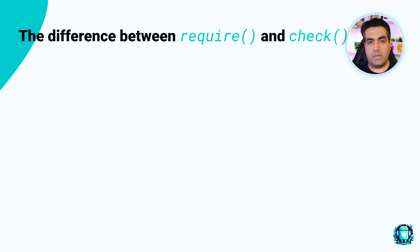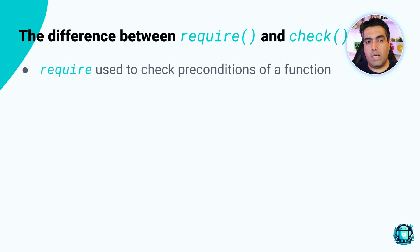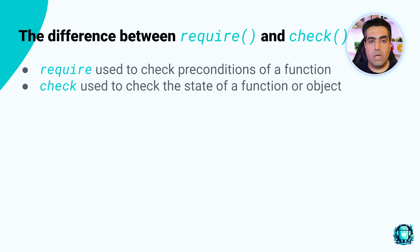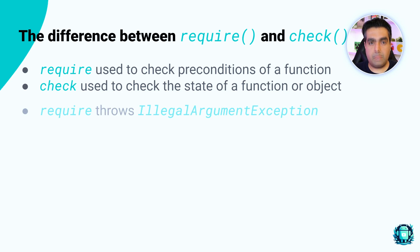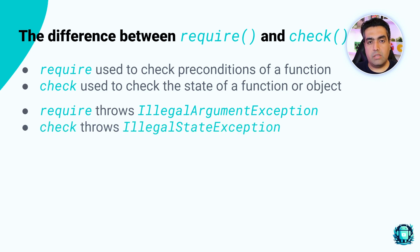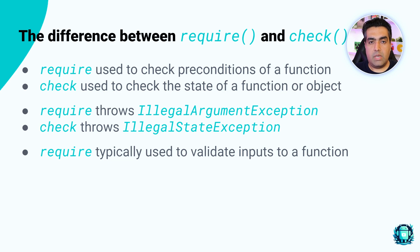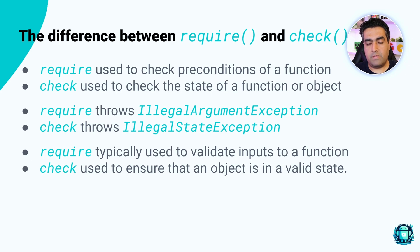You may ask yourself: what's the difference between require and check? As it sounds in English, require is used to check preconditions of a function — conditions that must be true before the function is executed. However, check is used to verify the state of a function or object — conditions that should be true during execution. require throws an IllegalArgumentException if the condition is not met, while check throws an IllegalStateException. The typical use case for require is validating inputs; for check, it's ensuring an object is in a valid state.